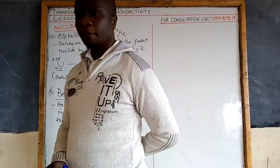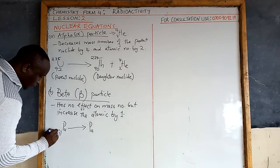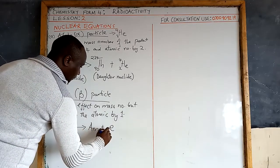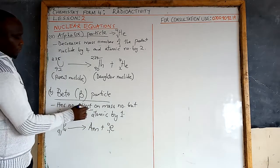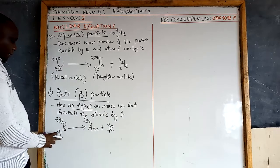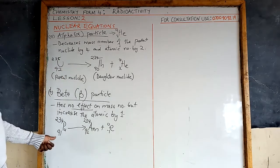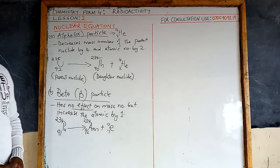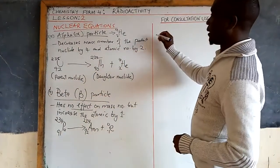The daughter nuclide has mass number 241 and atomic number 95 — that is americium. The electron emitted has charge negative one and mass zero. The mass number is not affected and remains the same, but the atomic number increases by one from the parent to the daughter nuclide.